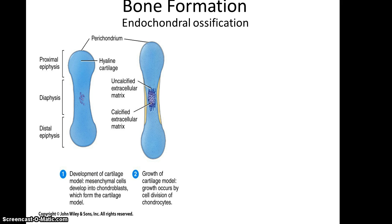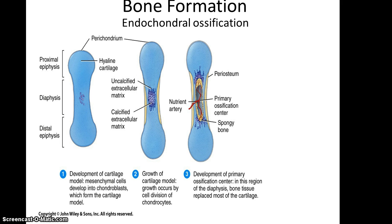Eventually, cells within the hyaline cartilage differentiate into osteoblasts that begin forming the extracellular matrix expected for bone tissue, and this matrix will begin to calcify. This leads to the development of a primary ossification center, where you begin to see structures expected in bone tissue, like lacunae and canaliculi. The spongy bone will form, and where bone exists, you now have periosteum instead of perichondrium — because periosteum is the tissue surrounding bone.